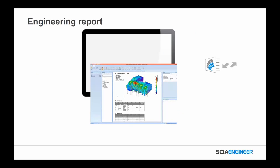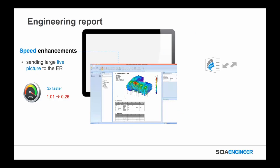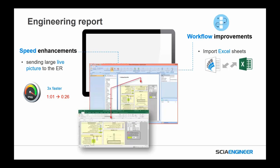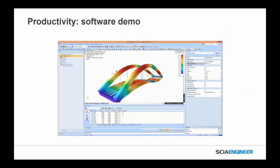We've made some nice changes to speed in the engineering report as well. With the way we've done data transfer and memory storage, setting live pictures is up to three times faster. We have directly importing Excel sheets — being able to use live Excel sheets — and making changes to those external Excel sheets and having them updated. You can edit 1D and 2D results in drawings, and we can have independent report template paths.